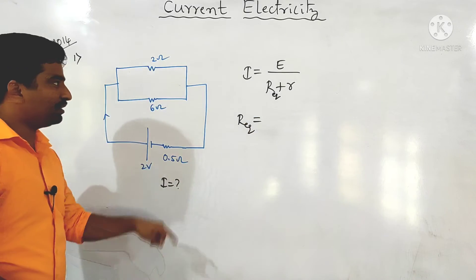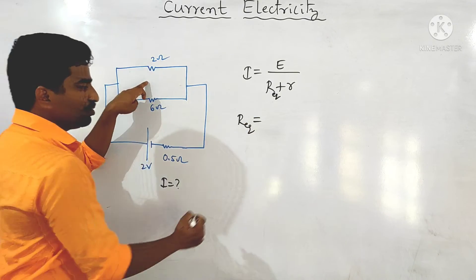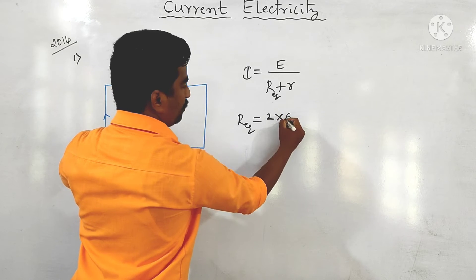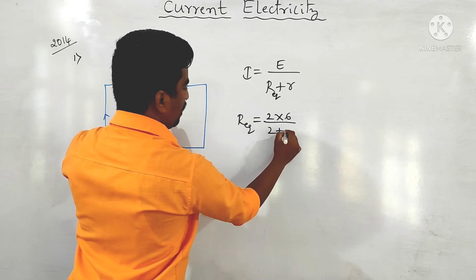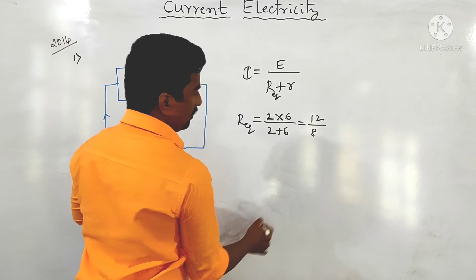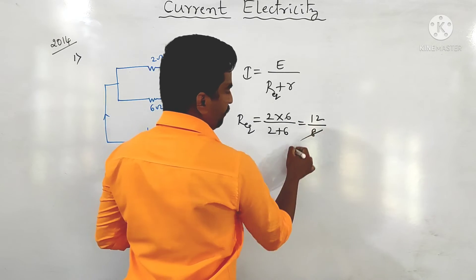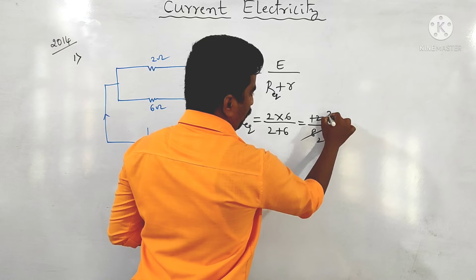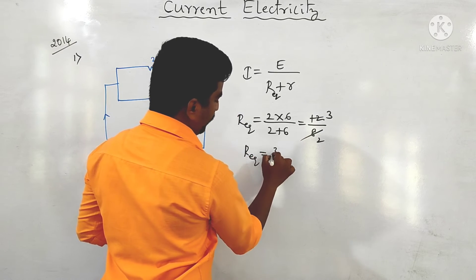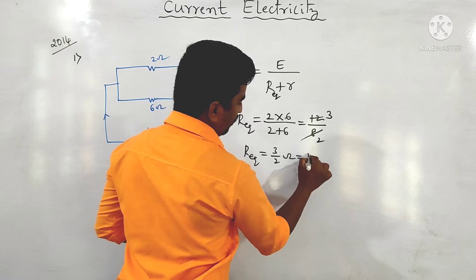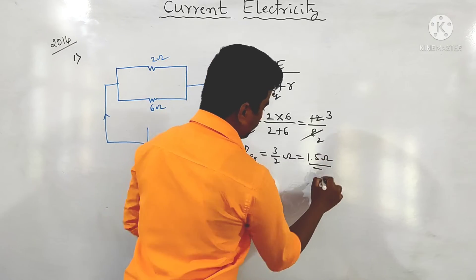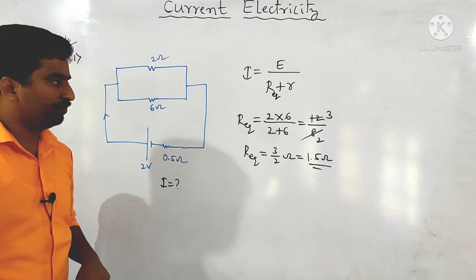For two resistors in parallel: R equivalent = R1 × R2 / (R1 + R2) = (2 × 6) / (2 + 6) = 12 / 8 = 3/2 = 1.5 ohm.